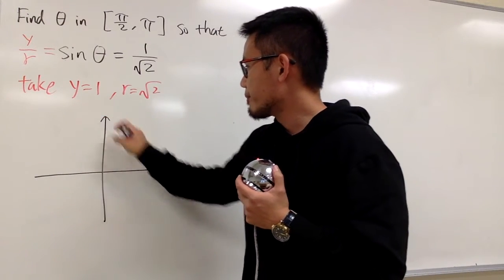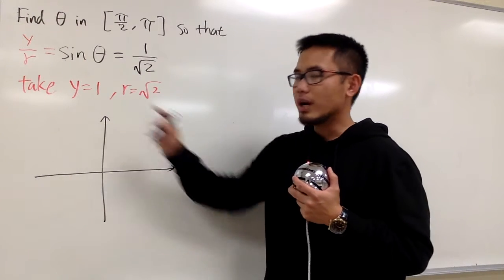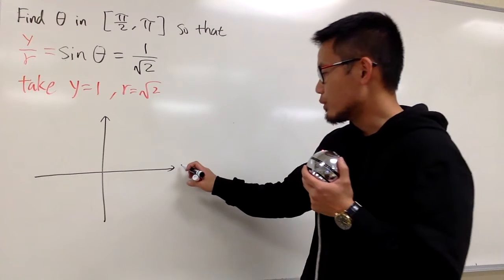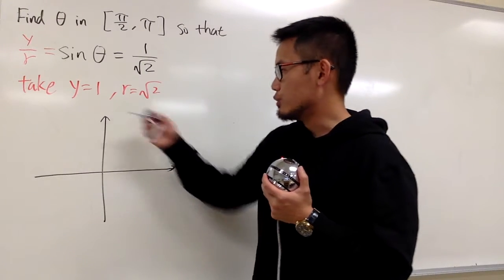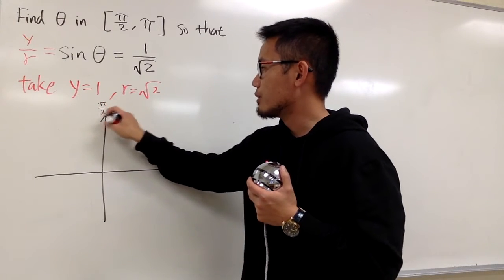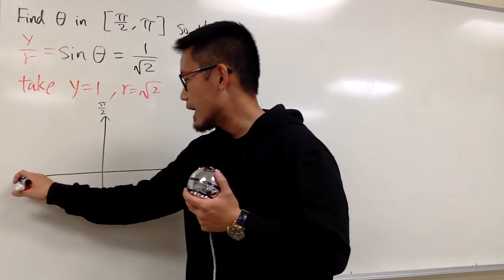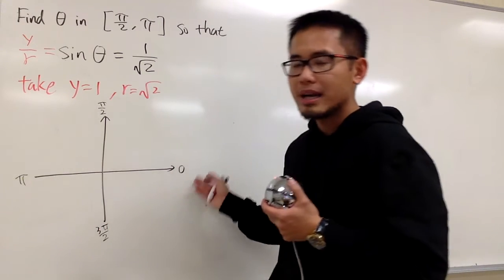Let me draw a picture right here. First of all, we know this is the x-axis, that's the y-axis. And I want to emphasize that here is zero radians, which is zero degrees. This is 90 degrees, which is the same as pi over 2. And then here is pi, here is 3 pi over 2, and then 2 pi.